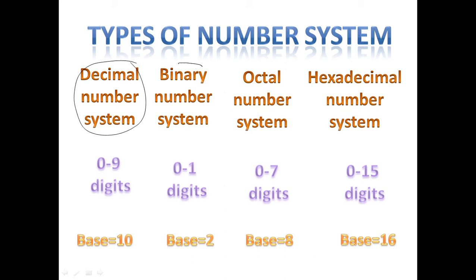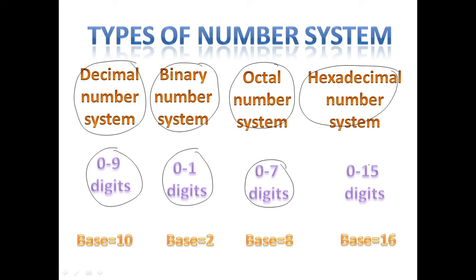Second is binary number system, third is octal number system, fourth is hexadecimal number system. In decimal number system we use zero to nine digits. In binary number system we use zero and one digits. In octal number system we use zero to seven digits, and in hexadecimal number system we use zero to fifteen digits.